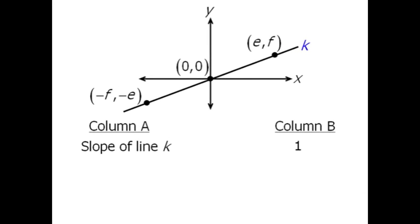Alright, to begin, we can use these two points to calculate the slope of line k. The slope will be equal to f over e, so column A is equal to f over e.